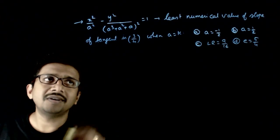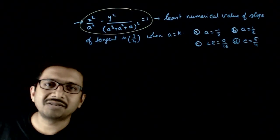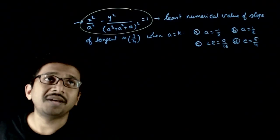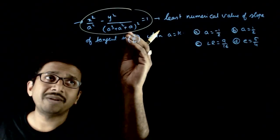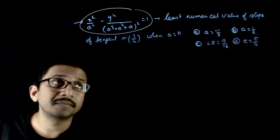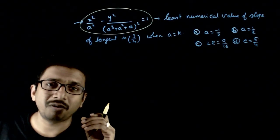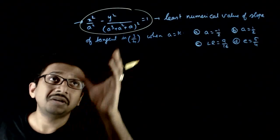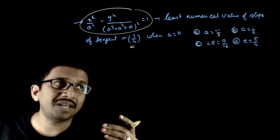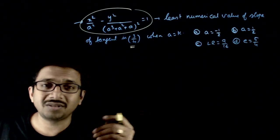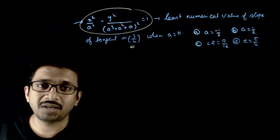Welcome students. In this question, given that you have a hyperbola x²/a² minus y²/(a³ + a²)² equals 1, and the least numerical value of the slope of the tangent to this hyperbola is 3/4. So what is the value of a, what is the latus rectum, and what is the eccentricity? These are the questions being asked.